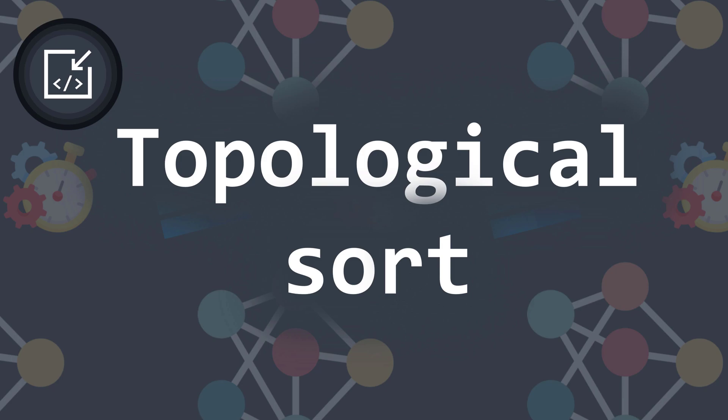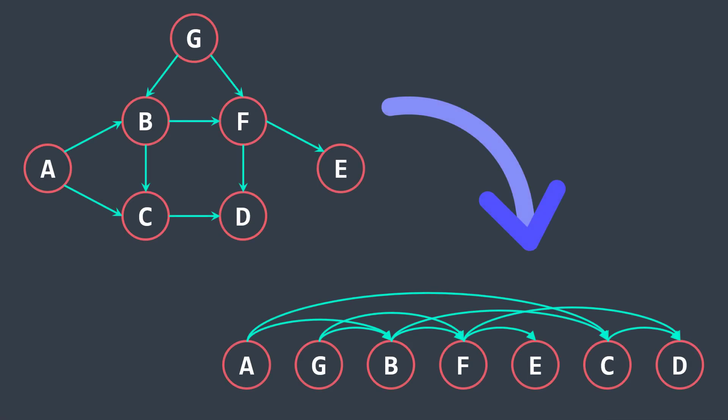And here comes the topological sort algorithm, an algorithm that orders the nodes of a directed acyclic graph in a way such that for every edge from u to v, u comes before v in the ordering.